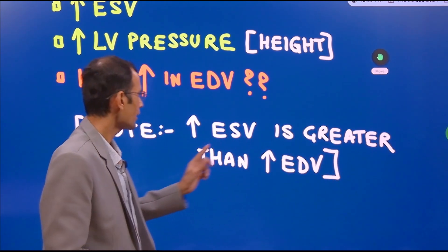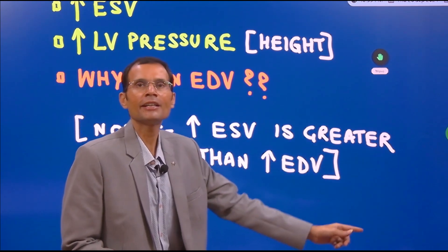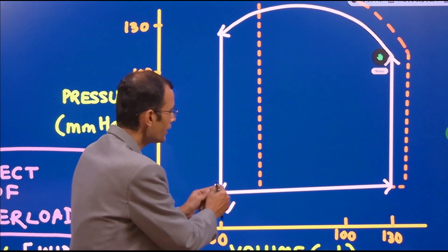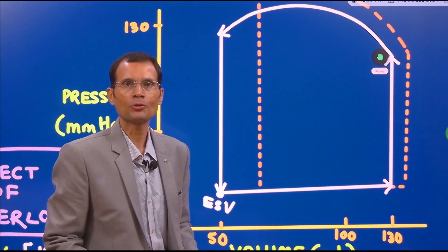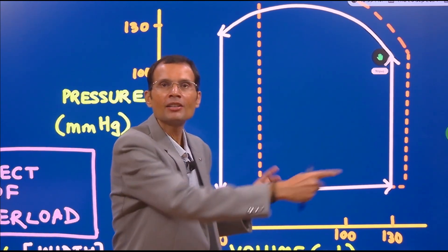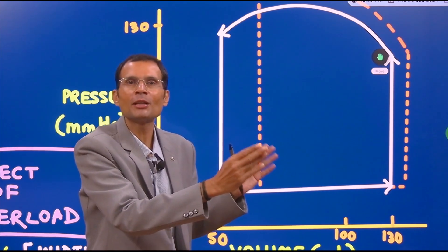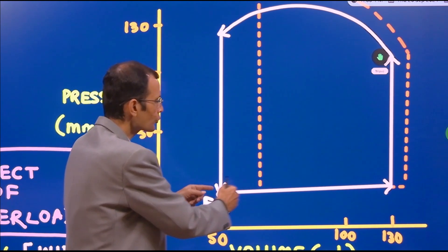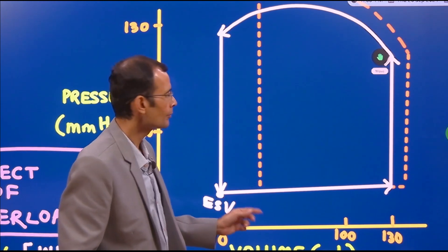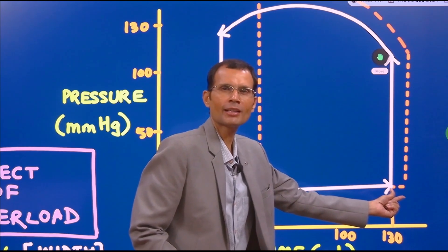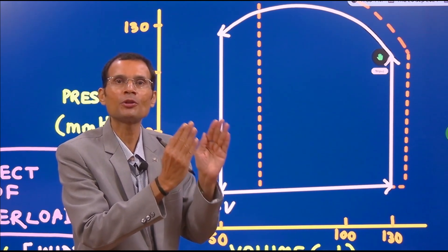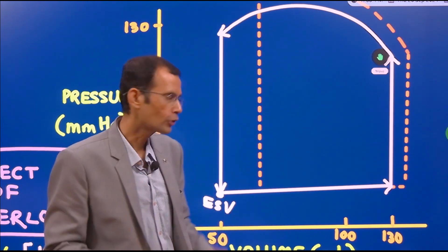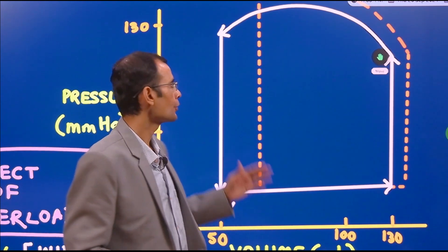Note this key point: increase in ESV is greater than increase in EDV. If both were increasing in the same proportion, the width of the loop would remain the same and stroke volume would remain the same. But what happens is ESV increases much more compared to the slight increase in EDV. Therefore the width of the loop narrows, and since width indicates stroke volume, stroke volume is decreasing due to the increased afterload. Fascinating physiology.